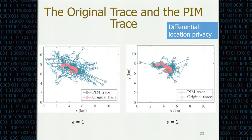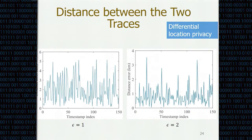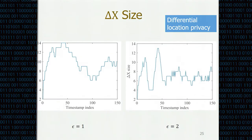We first evaluated the differential location privacy aspect of our system. We can see that as epsilon increases, the perturbed mobility trace becomes closer to the original trace, meaning the differential location privacy protection is degraded. Correspondingly, the distance error between the two traces decreases as epsilon increases. Regarding the data location set, recall that it refers to all possible locations where a participant will likely be located. When the data location set size decreases, the number of locations for the participant to hide in is reduced — and this is what we see as epsilon increases.